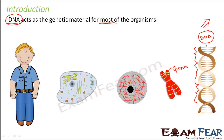During the first half of the lesson, we will spend most of the time understanding what genetic material is and how it was proved that DNA acts as the genetic material. There are quite a few other molecules present inside our cells — proteins, carbohydrates, lipids, RNA, and DNA. So how do we know that among all these, DNA is the one that can act as the genetic material? That is the entire story we are going to discuss.